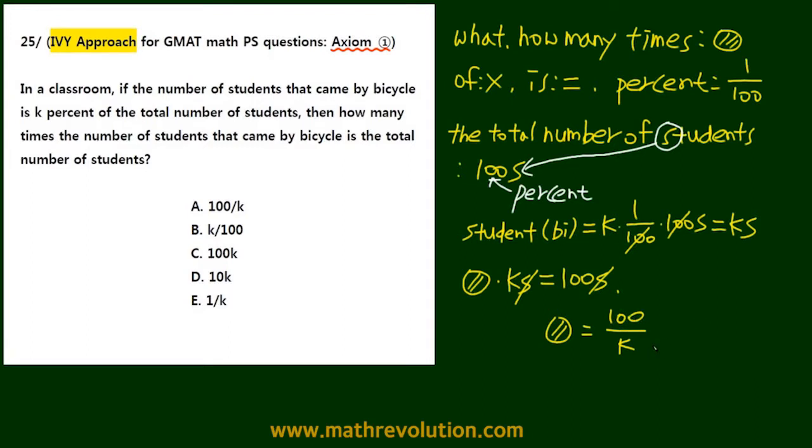Remember how we use the axioms to translate the question into a mathematical equation. So our answer for this question was choice A, 100 over k.